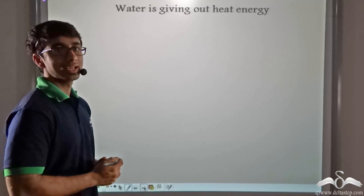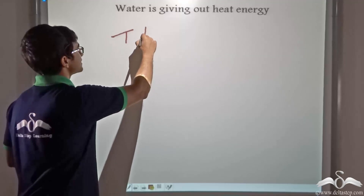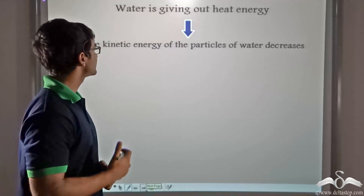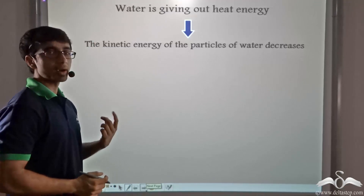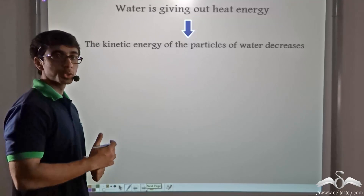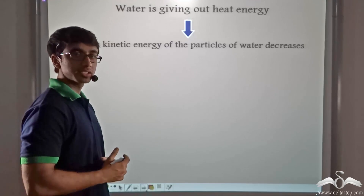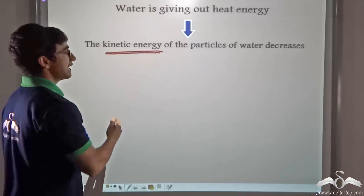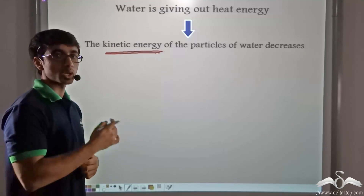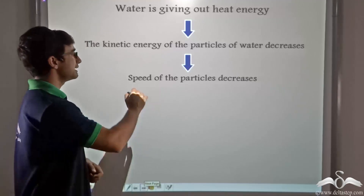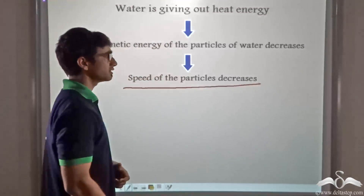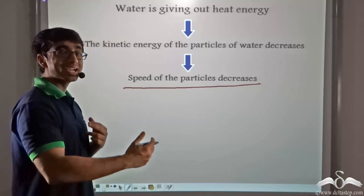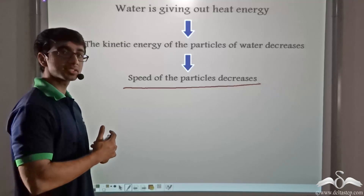As a result, the temperature is decreasing. So as a direct consequence of the decrease in temperature, the kinetic energy of the particles of water decreases. So due to this, the velocity of the water particles will decrease, because the kinetic energy and velocity of particles are directly dependent on one another. So the speed of the particles will decrease. The moment this happens, the particles will come close to one another, and the inter-particle distance between the particles will decrease.